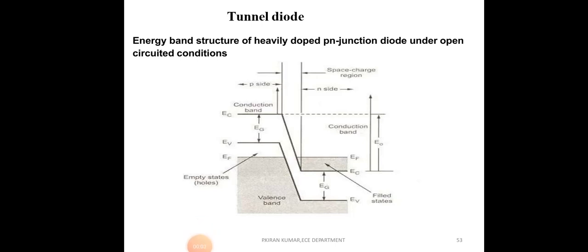Today's topic is the tunnel diode. What is the difference between a normal PN junction diode and a tunnel diode? The first difference is that a tunnel diode is a heavily doped diode and a normal diode is a lightly doped diode. The doping level of a tunnel diode is 1 to 10 to the power of 3, and for a PN junction diode the doping level is 1 to 10 to the power of 9.